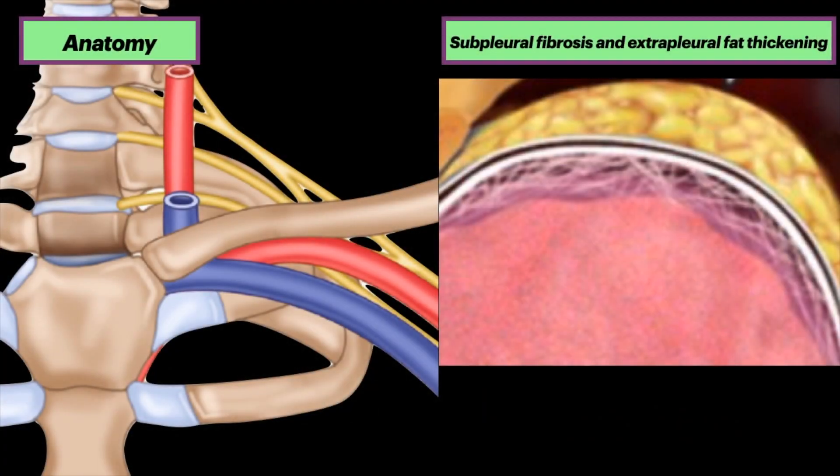In addition to the lung, the apical region of the hemithorax includes arteries, veins, nerves, lymphatics, bones, and lymph nodes. The right-hand image shows apical subpleural fibrosis and extrapleural fat thickening, which often accounts for apical caps seen on radiographs.